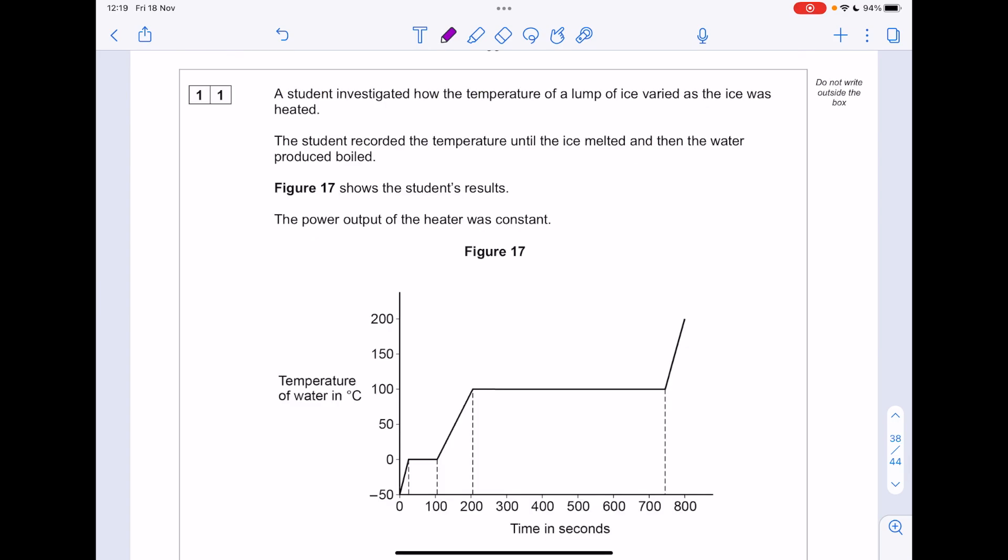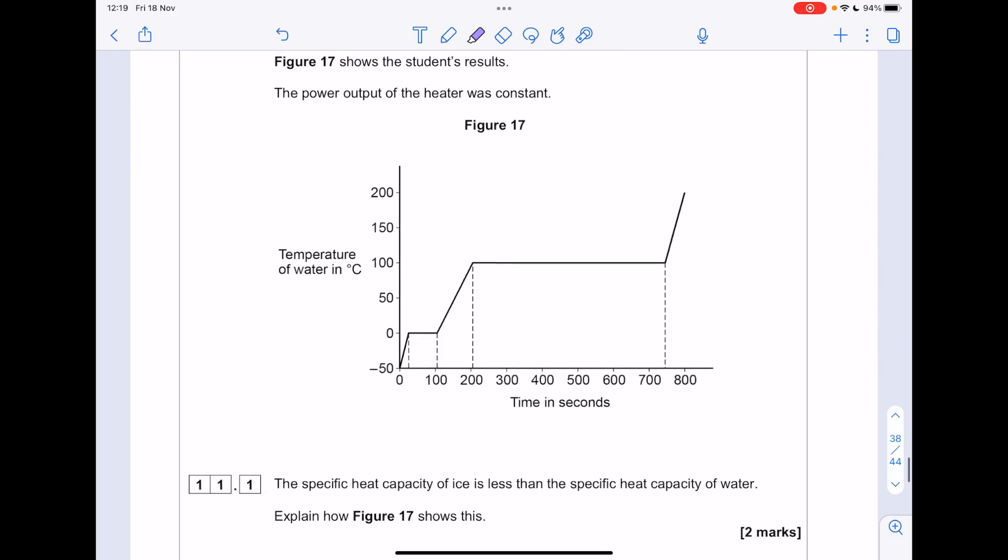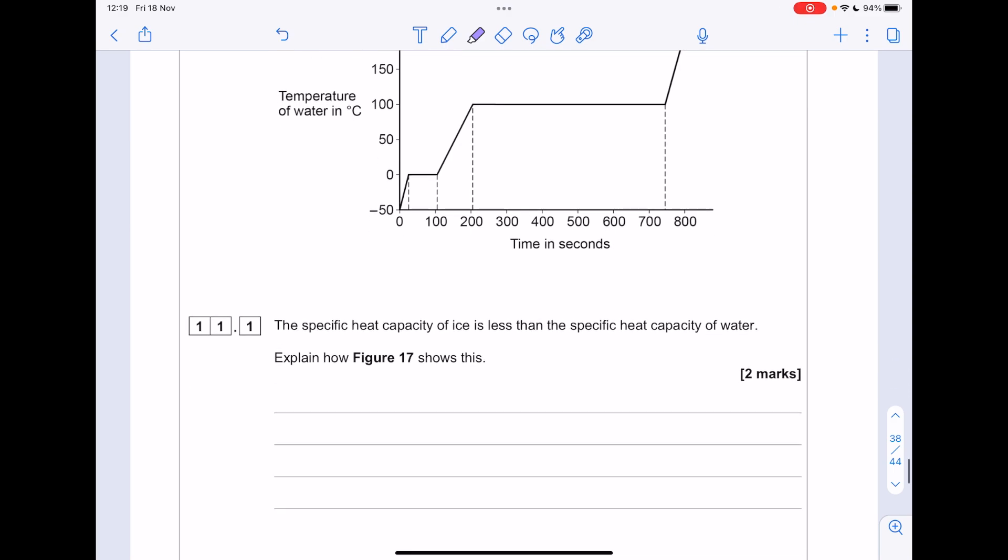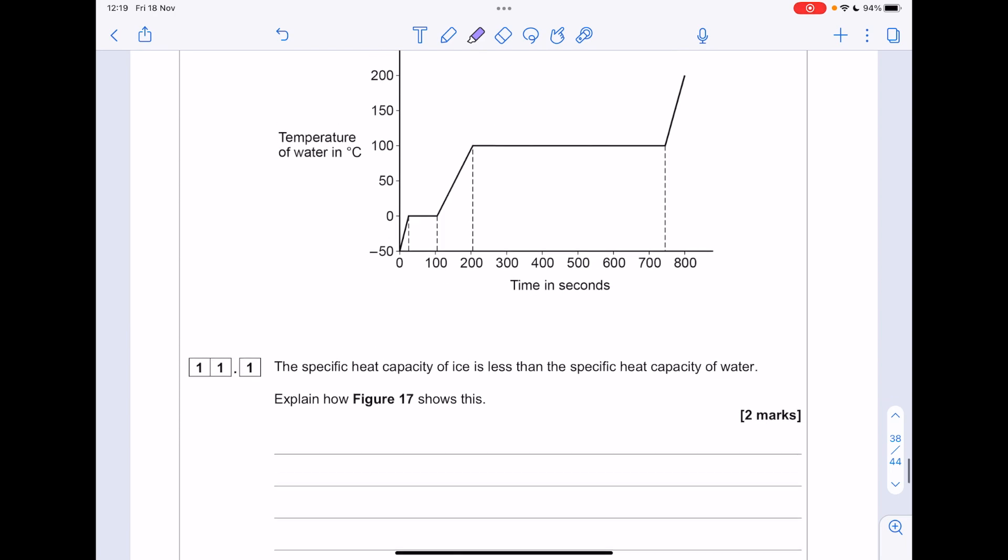The student investigated how the temperature of a lump of ice varied as the ice was heated. The student recorded the temperature until the ice melted and then the water produced was boiled. Figure 17 shows the student's results. The power output of the heater was constant. The specific heat capacity of ice is less than the specific heat capacity of water. Explain how figure 17 shows this. This, remember, is the amount of energy required to increase the temperature of one kilogram of a substance by one degree Celsius.